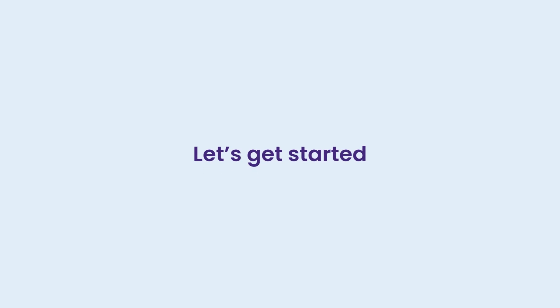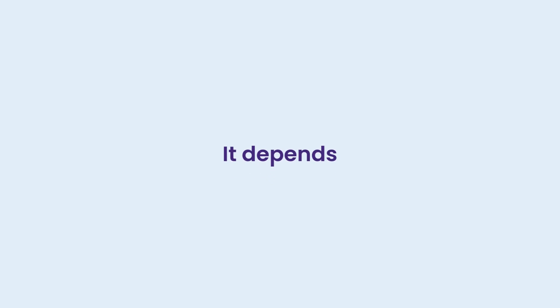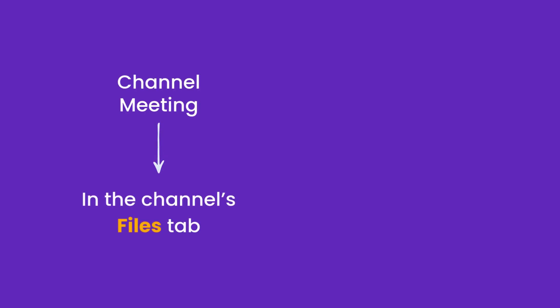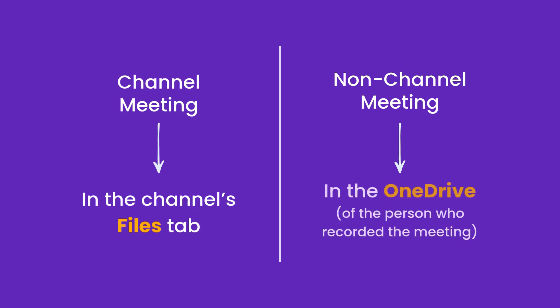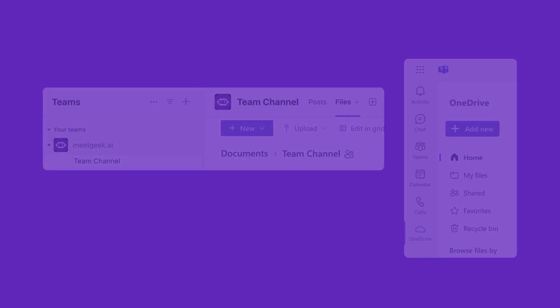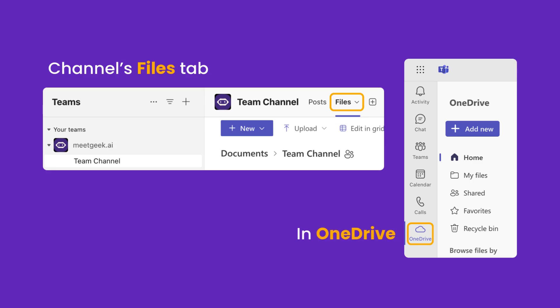First things first, where do Teams meeting recordings go? Well, it depends. If it was a channel meeting, the recording is stored in the channel's Files tab. If the meeting wasn't tied to a specific channel, the recording is saved in the OneDrive of the person who recorded the meeting. So if you're ever searching for a past recording, these are the first places to check.